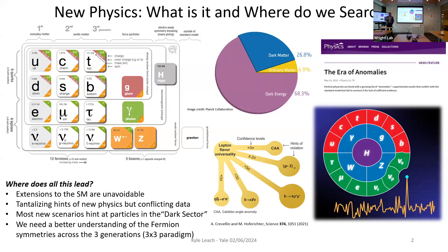Extensions to the standard model are completely unavoidable at this point because we know that at least two of the three neutrino mass states are non-zero. So any extension to the standard model has to include that. There are tantalizing hints of new physics but conflicting data in these sectors—this is what we mean by the era of anomalies. Most new scenarios predict particles in the dark sector, meaning that if they were strongly interacting with the charged forces of the standard model we would have seen them already, so they must have some property that keeps them hidden while still generating effects.